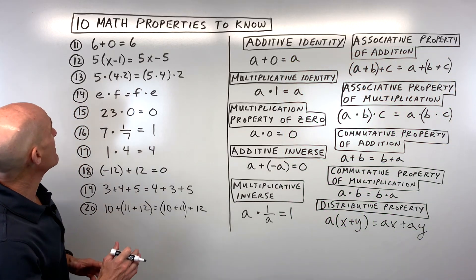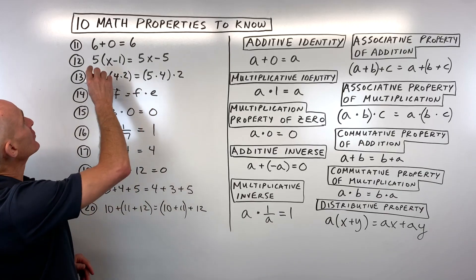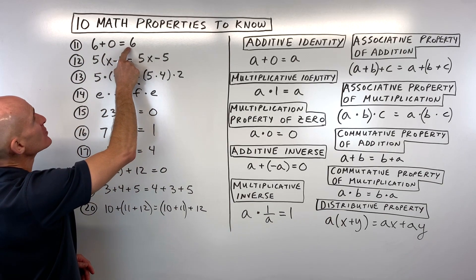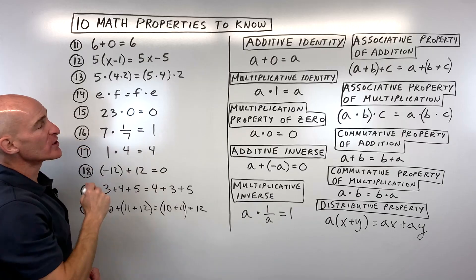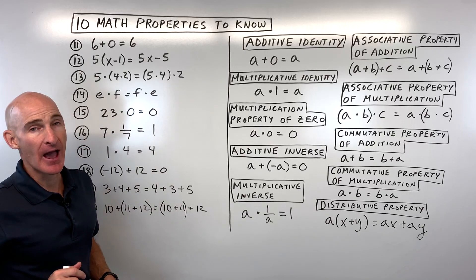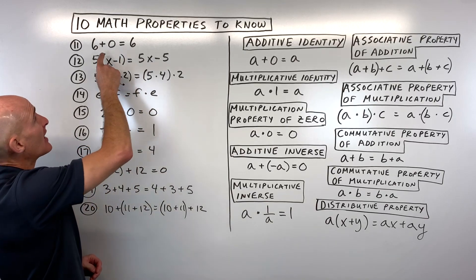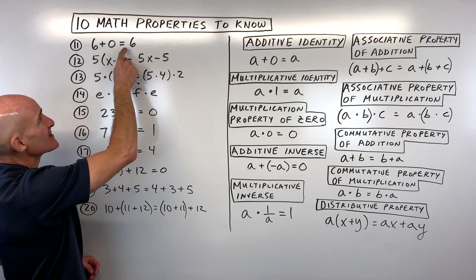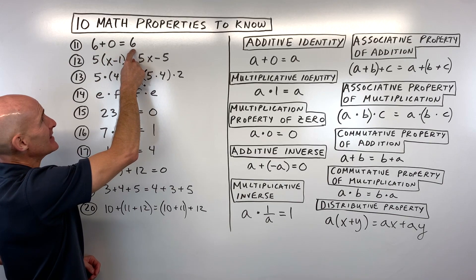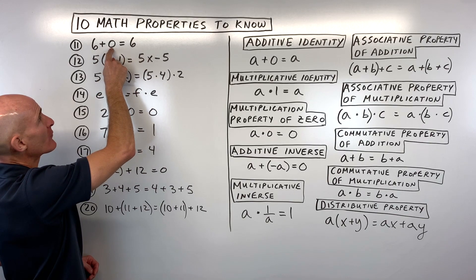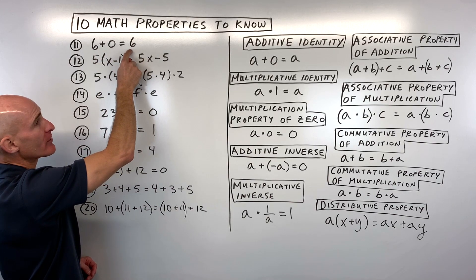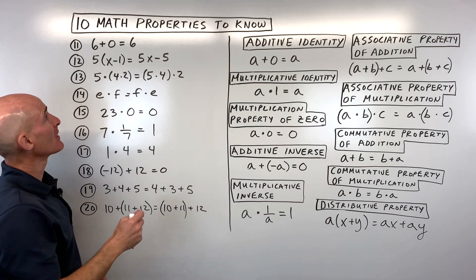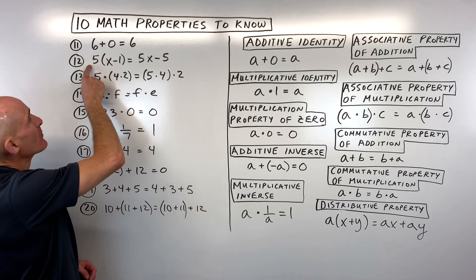Number 11: six plus zero equals six. We started with six and ended with six — that's an identity. Whenever you add zero to something you get the identical thing back — that's the additive identity.